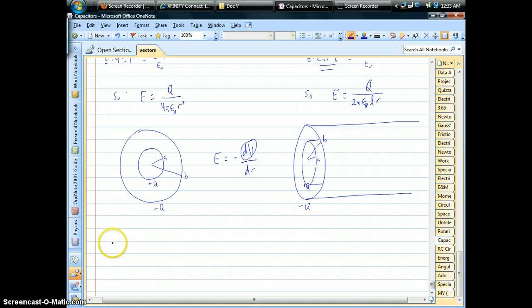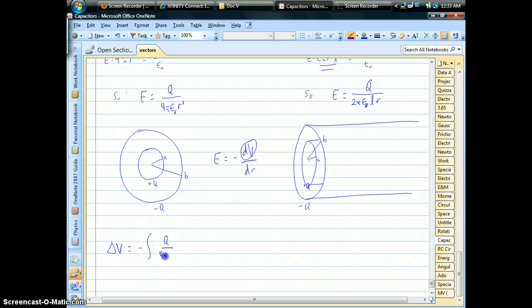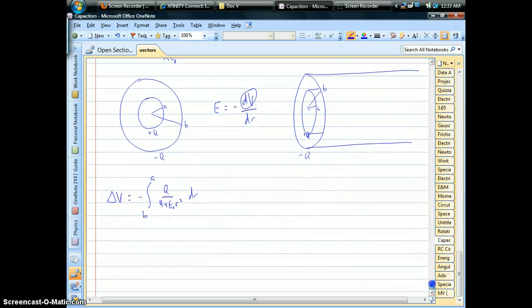So, for the spheres, the voltage difference between the two shells is the negative integral of our electric field, which we now know. And we're doing voltages, basically from the outside inward. So, from D to A are the bounds on that.